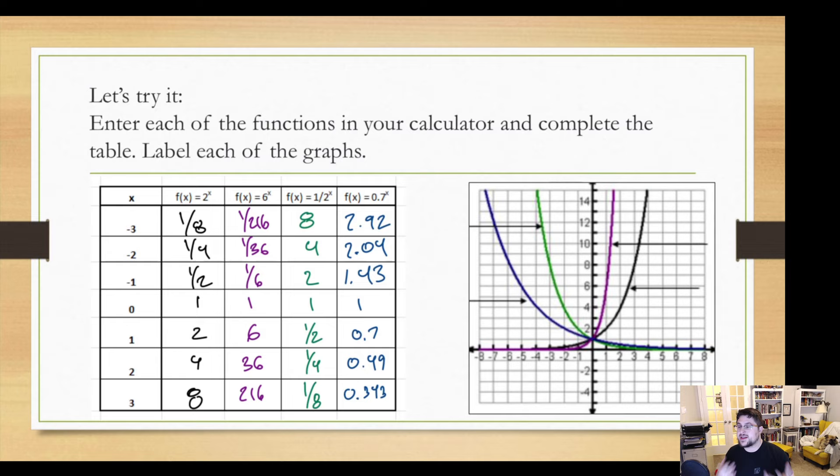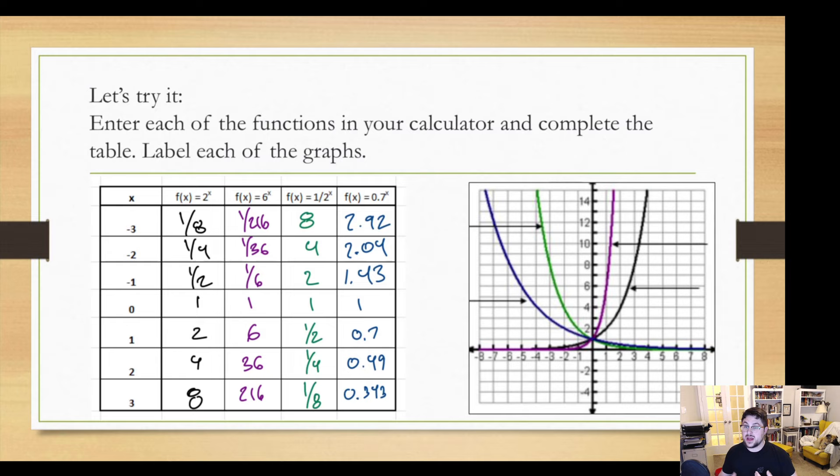So let's take a look at these different functions and identify them. We have 2 to the x, 6 to the x, one half to the x, and 0.7 to the x. If we put these all into our calculator, we'll get these tables. What's going on is these numbers like 2, 6, one half, are what's determining what we're multiplying by.